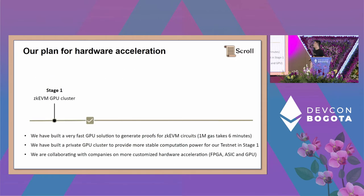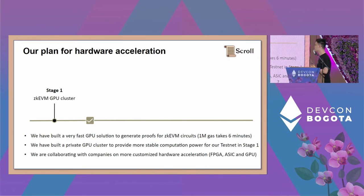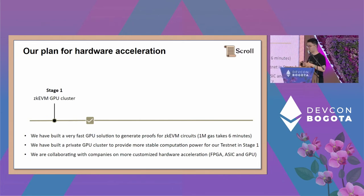The community often asks about our decentralized prover: what are the hardware requirements and what's our plan for hardware acceleration? We have three stages. In stage one, we build a private ZK EVM GPU cluster for running the prover. We have already built a very fast GPU solution to generate proofs for our ZK EVM circuits — currently, one million gas only takes six minutes to generate proof, which is actually very fast. We have also built a private GPU cluster providing stable computation power for our testnet. Meanwhile, we are collaborating with several large ZK hardware companies building customized solutions — including FPGA, ASIC, and GPU solutions.